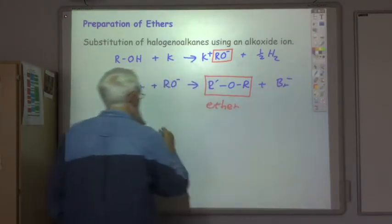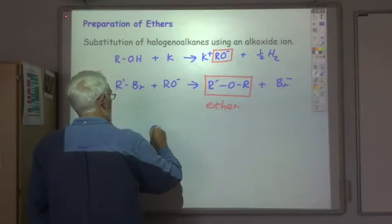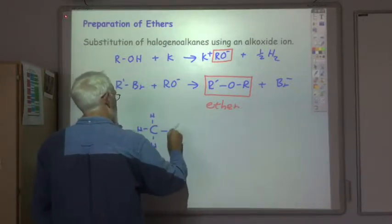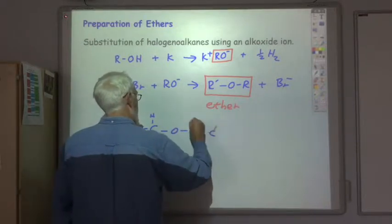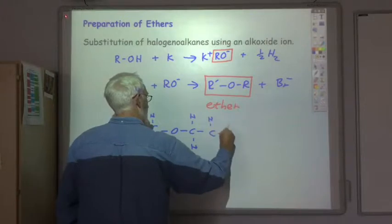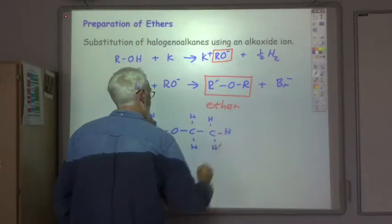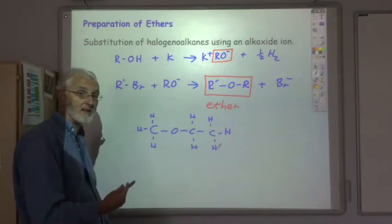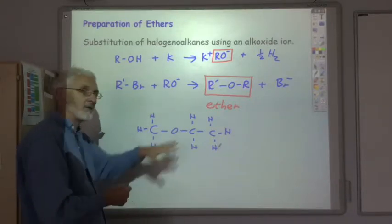So two alkyl groups join together with an oxygen. So for example it could be something like that. So that's how we make ether. Next question is what do we call this thing?